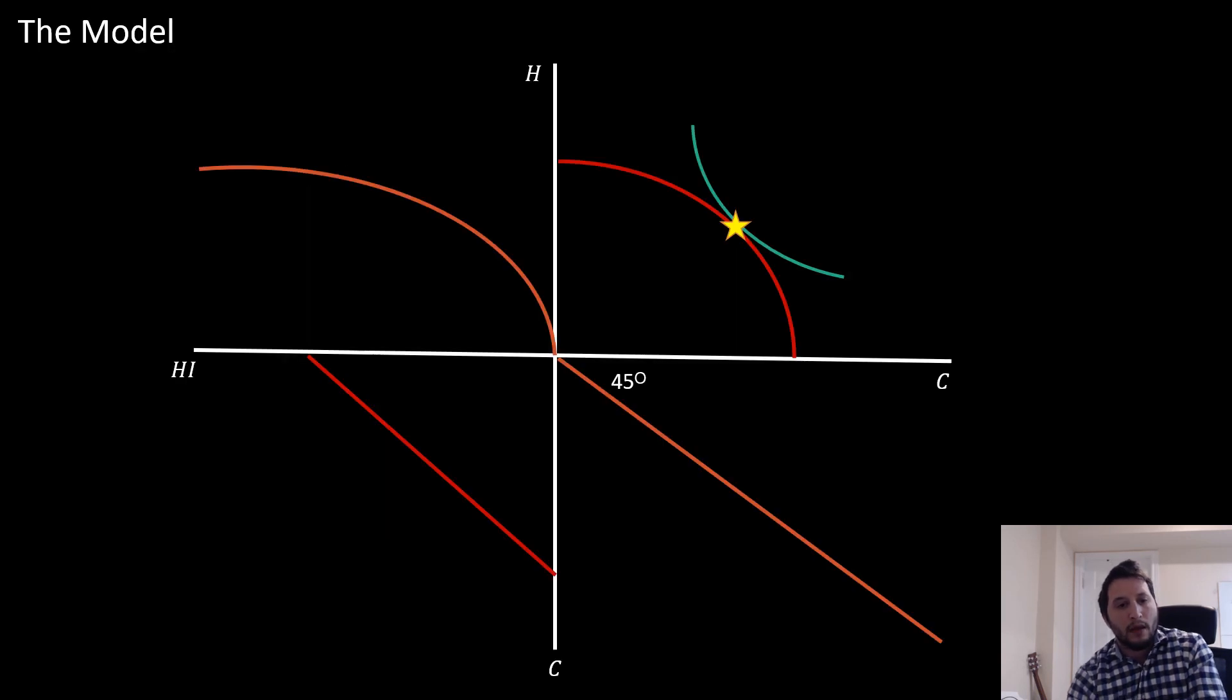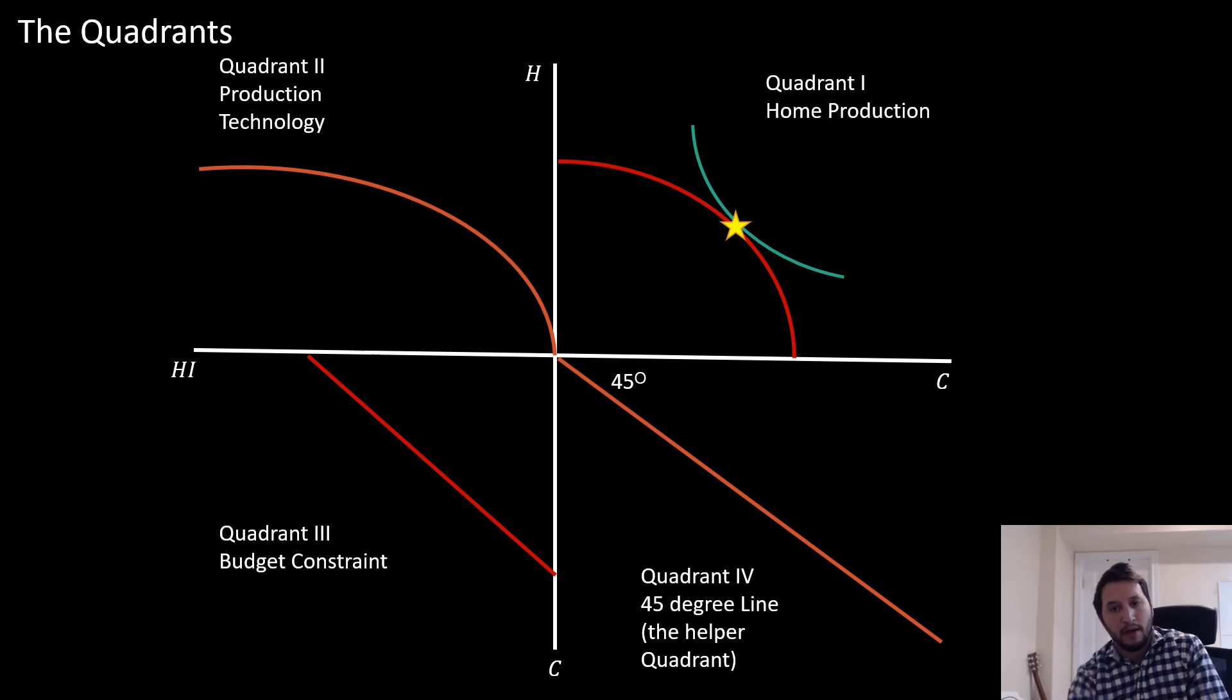We can think about this model as this four-quadrant type of thing. The first quadrant is our home production, where our individual chooses between producing a consumption good and health status.